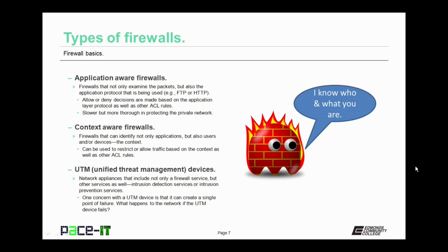Then there are Unified Threat Management devices, or UTM devices. These are network appliances that include not only a firewall service but other services as well, usually intrusion detection services or intrusion prevention services. One concern with a UTM device is that it can create a single point of failure in the network — if that UTM device fails, your security may be gone or your network may go down. That is a key concern about using a UTM.